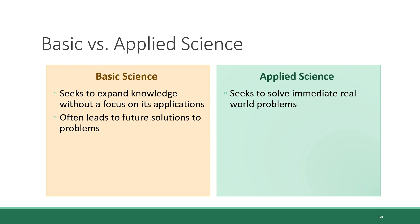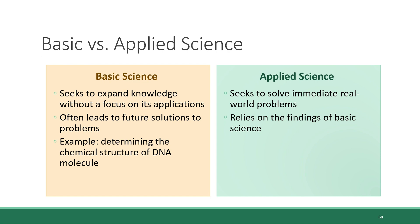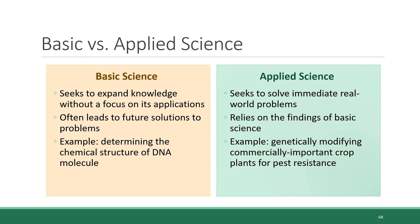Applied science relies heavily on information that comes out of basic science endeavors. For example, a well-known example of basic science was the discovery of the chemical structure of DNA molecules back in the early 1950s. When this discovery was made, there were no applications for this information, no ways that it could be used to solve real problems. But decades later, applied science was able to take that information about the chemical structure of DNA and use it as the basis for genetically modifying commercially important crop plants and make them more resistant to pests. This solves a real-world problem, but it relies on basic science to do so.